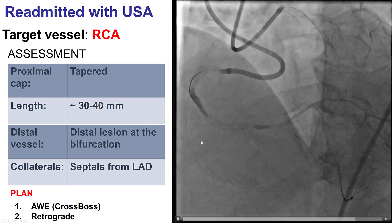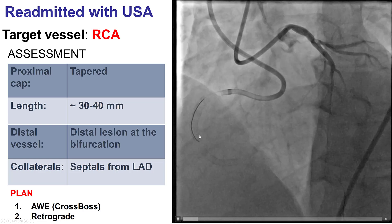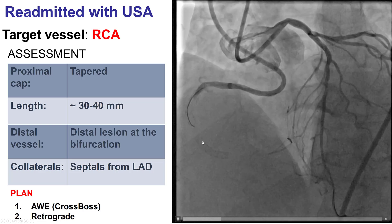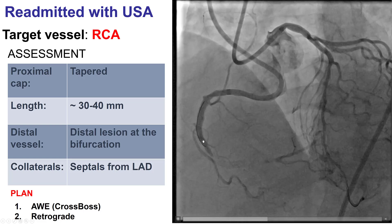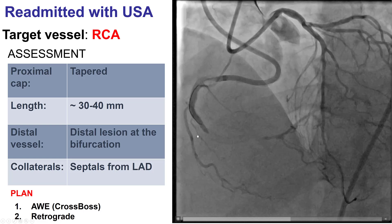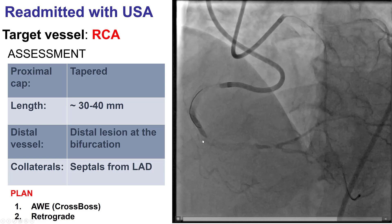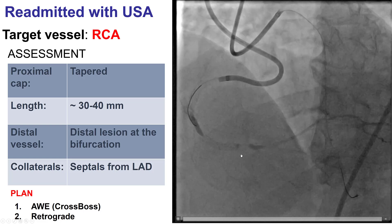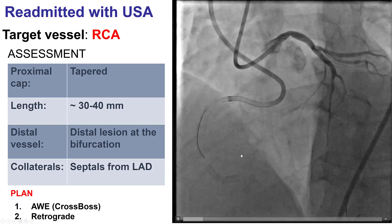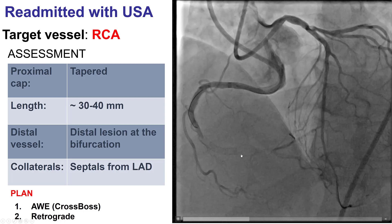Given the favorable proximal cap, we decided to try antegrade wiring first, and we decided to use the CrossBoss catheter, which can result in quick crossing of in-stent CTOs based on the CrossBoss First study.